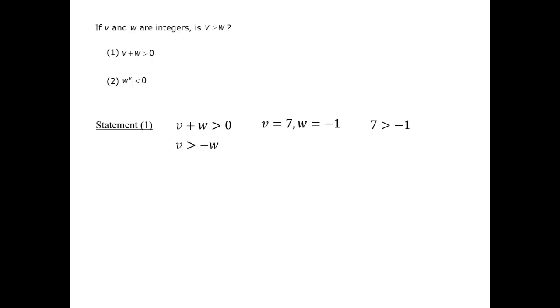However, we can construct another case, call it case 2, in which we switch the values of the numbers. This case is still permitted because the sum of the values is still greater than 0, but in this case, v is not greater than w, because minus 1 is not greater than 7.